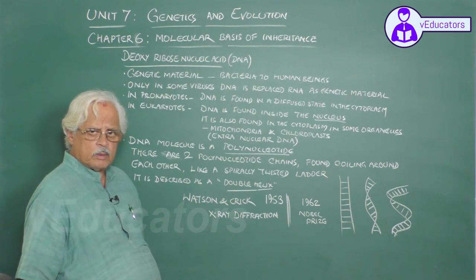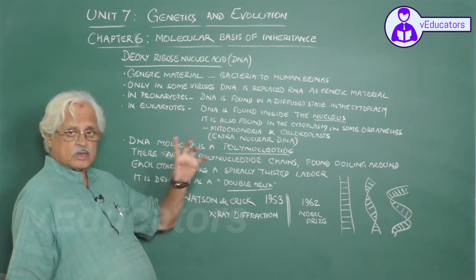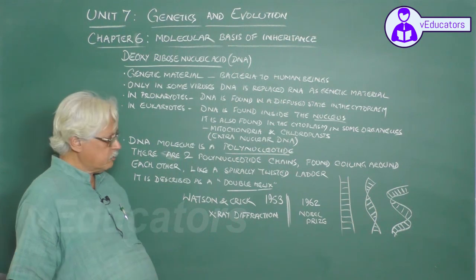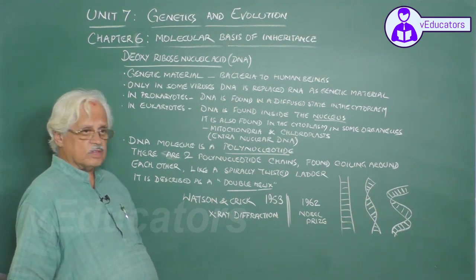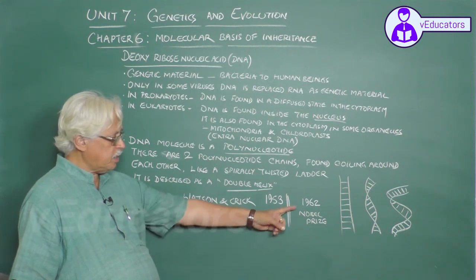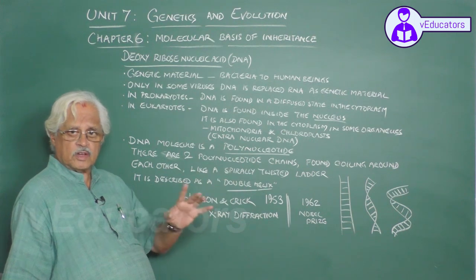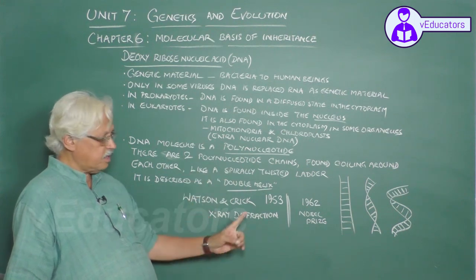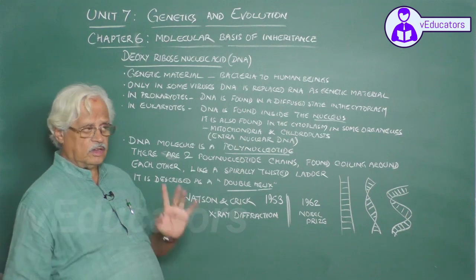Some time back, remember, I told you it was in 1869 that a substance called nuclein was identified by Miescher in the nucleus of a cell from 1869 to 1953. So it took so much time for the scientific world to arrive at the exact structure and function of the DNA molecule.